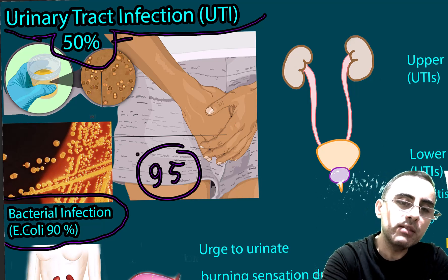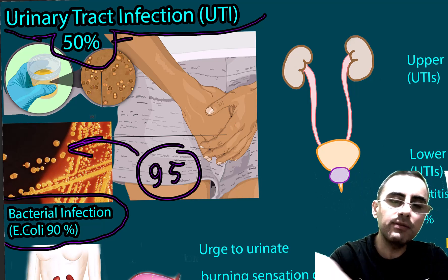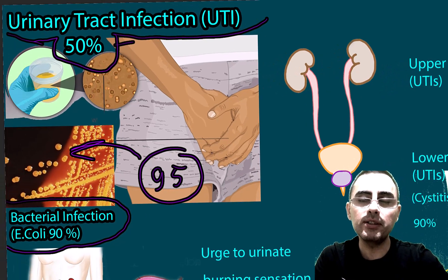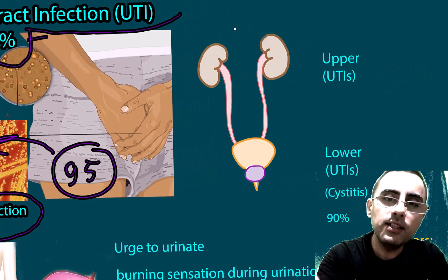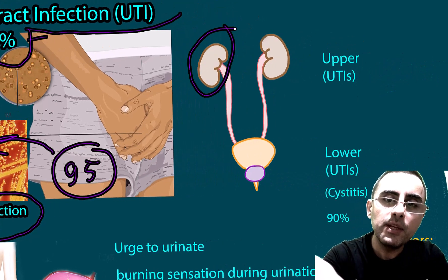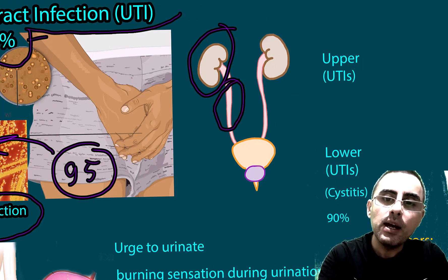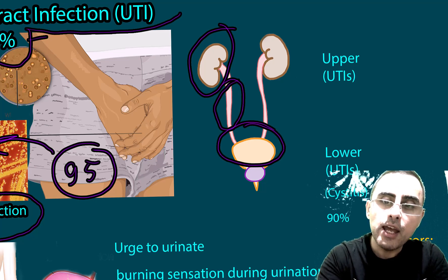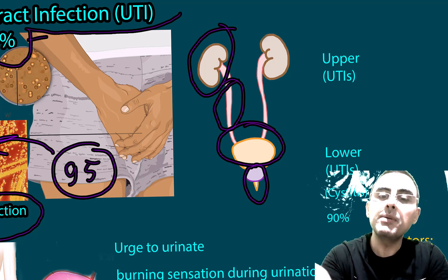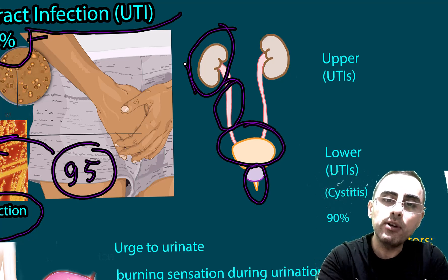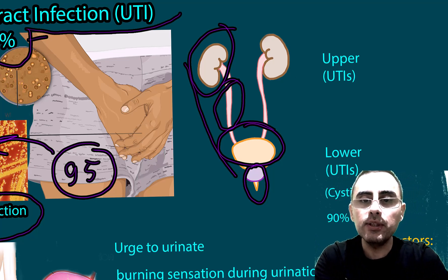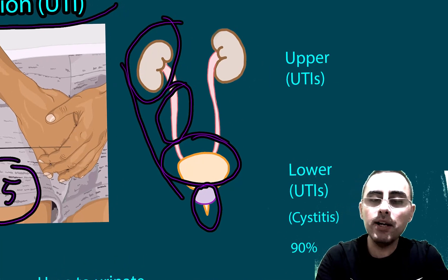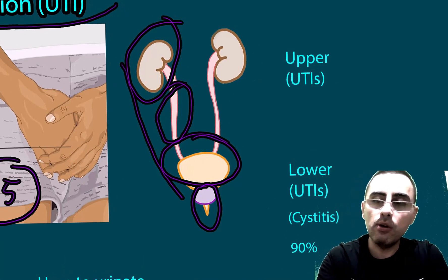It is a bacterial infection, and when we say urinary tract, we mean the kidneys, ureter, bladder, and urethra. Urinary tract infection can be upper or lower.